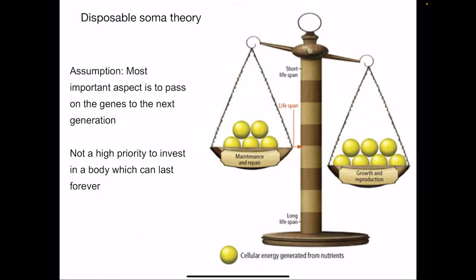Let us come to another theory: the disposable soma theory. According to this theory, we are not giving much importance to maintenance and repair, that is the soma. Soma is body. Maintenance and repair of body is given less importance compared to growth and reproduction. These yellow balls show the cellular energy generated from nutrients. This energy is more invested in growth and reproduction compared to maintenance and repair. By investing more energy in growth and reproduction, it causes proliferation of the species.